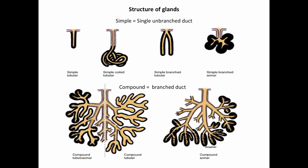Exocrine glands come in two general types. There are simple glands which have a single unbranched duct, and there are compound glands in which the duct itself branches. Simple glands can branch, but it's not the duct that branches — it's the actual secretory portion of the gland that branches, as shown here and here. And there's only one duct connected to the secretory units.